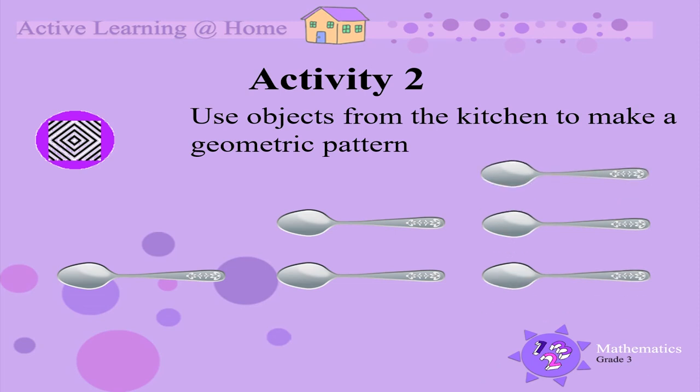Can you describe this geometric pattern? First there is one spoon, then two spoons, and then three spoons.